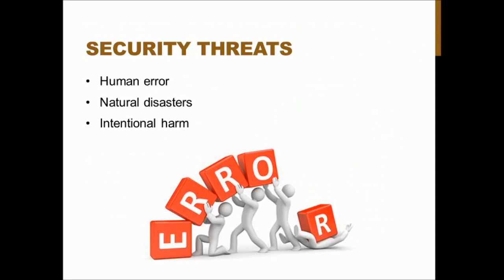There are three different types of security threats: human error, natural disasters, and intentional harm. Human error happens all the time — people might send the wrong health information or disclose information to a family member who shouldn't receive it. These things happen frequently, and there are a lot of guidelines in place to help prevent them.